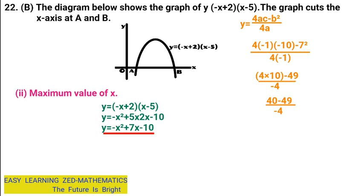Then I find the difference: 40 minus 49 gives negative 9, over negative 4. Now I'm going to cancel the negative signs — whatever you do on top, do it down. So the negatives cancel, leaving 9 over 4. That can be the answer as a proper fraction, or you can write it as a mixed fraction: 4 into 9 gives 2 remainder 1, so 2 and 1 over 4. That is the maximum value of x in that graph.